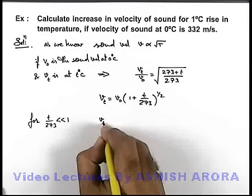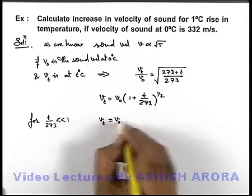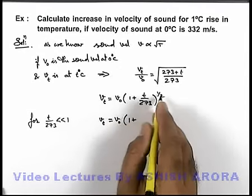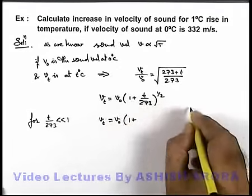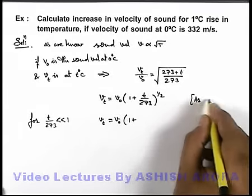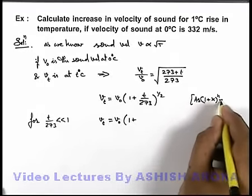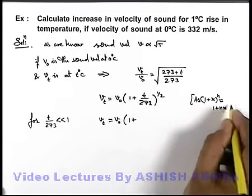We can use binomial and here v t can be written as v not 1 plus, this half will be taken in as we can write 1 plus x to power n as approximately 1 plus n x.